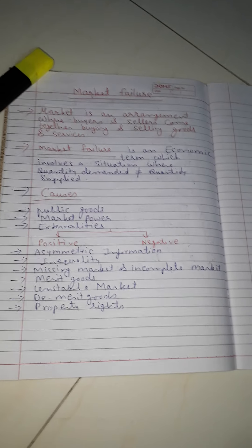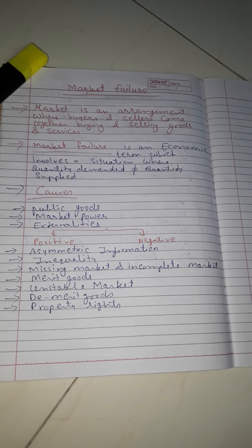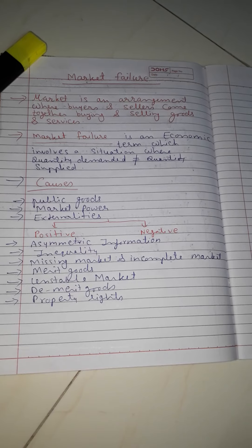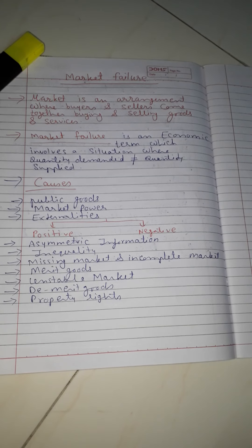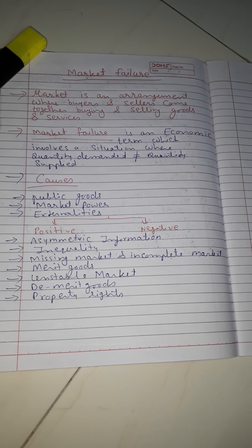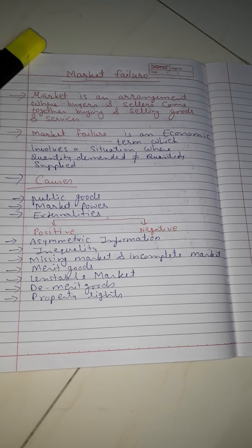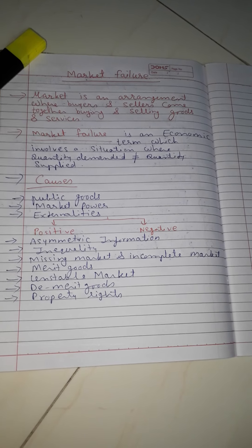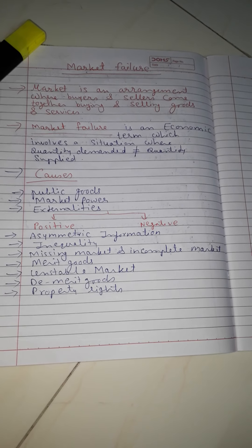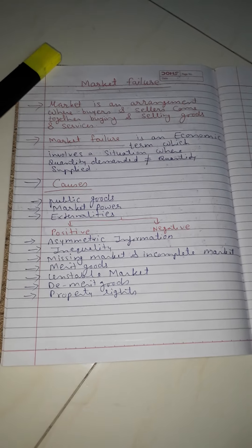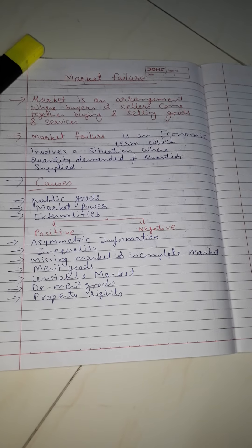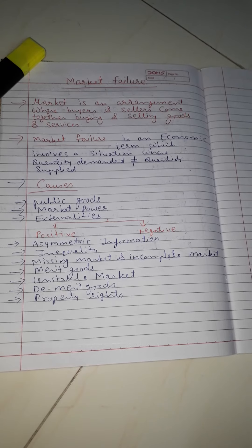The next reason is inequality. Inequality is also a reason for market failure. Inequality means the distribution of income and wealth is not equal among different groups in society. Because of that, some people become wealthy and many people remain poor. If the proportion of wealthy people is less, it will automatically affect the market and cause market failure.